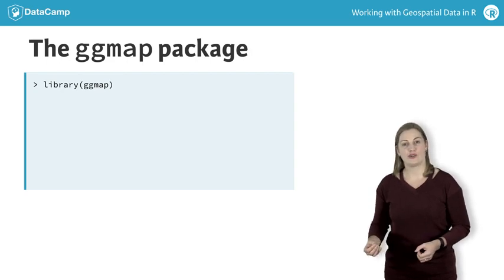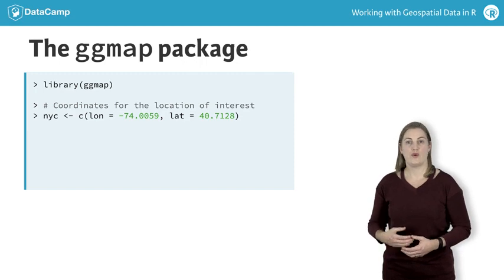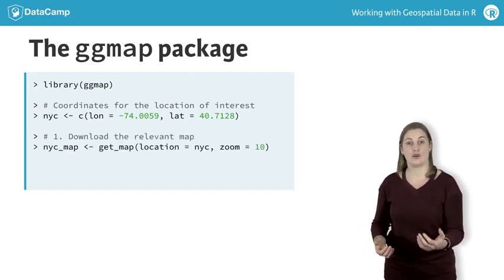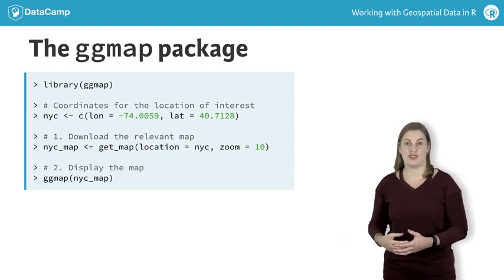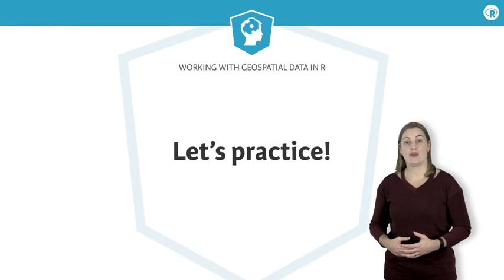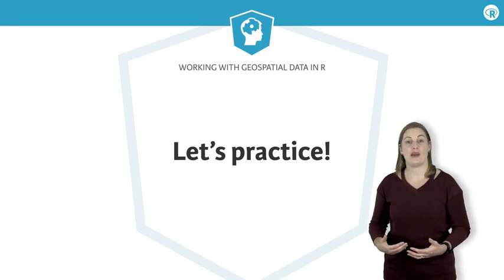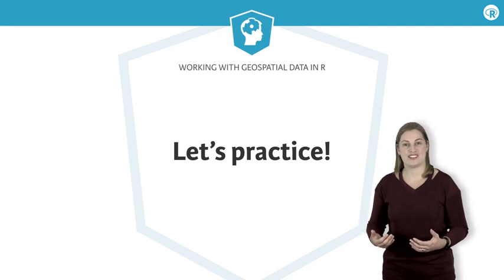Here's an example of getting a map of New York City. We know the location in latitude and longitude. We use the get_map function to download the map, passing in the location and a zoom parameter. Then we pass the result to the ggmap function, which displays the map. Over the next few exercises, you'll see how we can combine the ggmap function with our original ggplot2 map to add some context to our map of house sales. But first, you'll play with ggmap to learn where Corvallis is.